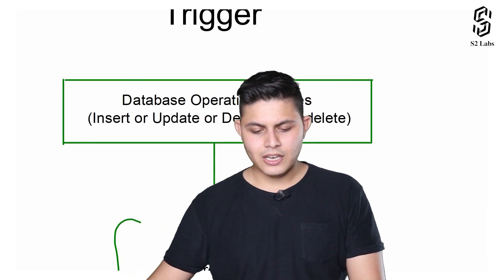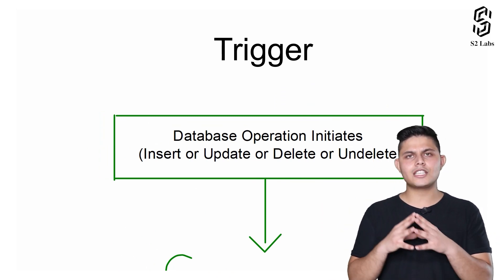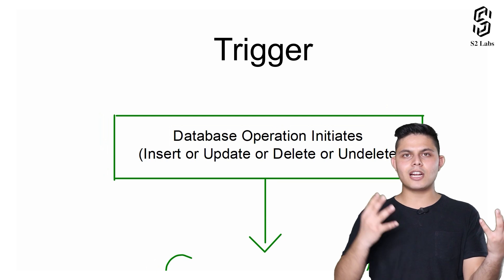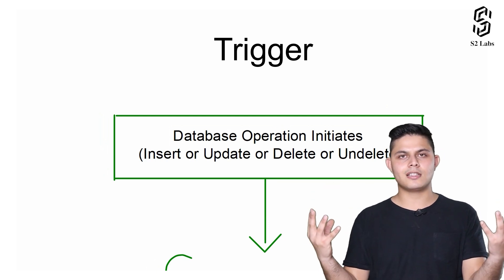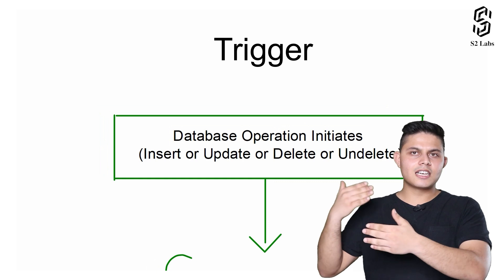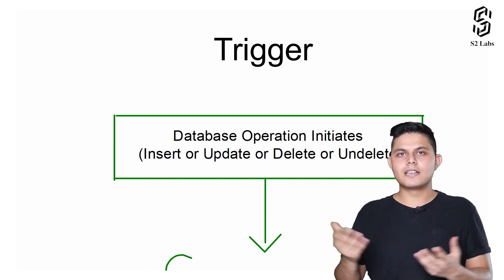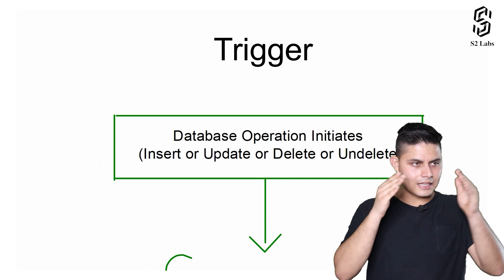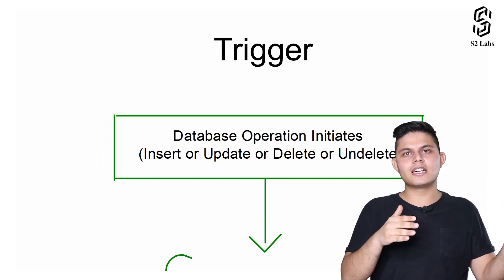It might sound confusing, but I have a flowchart with which we'll be able to understand it in an easier way. The number one thing to understand is: triggers are nothing without a database operation. Whenever a record gets inserted, updated, deleted, or undeleted — that change initiates a database operation.